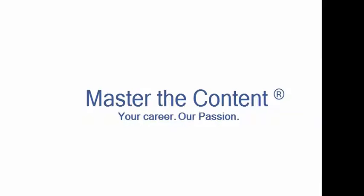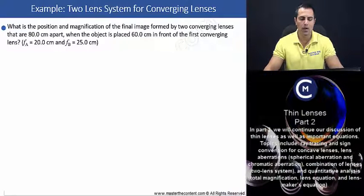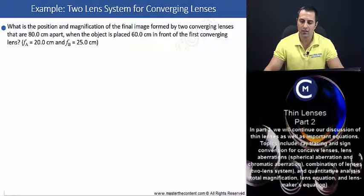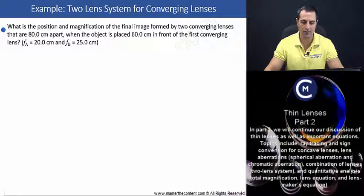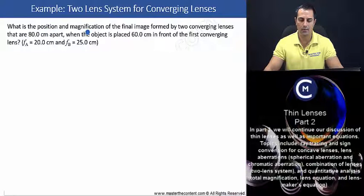Your career, our passion. Now let's begin by reading our problem. Example: two-lens system for converging lenses. What is the position and magnification of the final image formed by two converging lenses that are 80 centimeters apart, when the object is placed 60 centimeters in front of the first converging lens? The focal lengths are also given. We'll first find the position, and then we'll find the magnification.